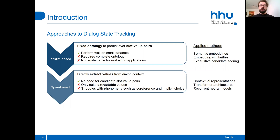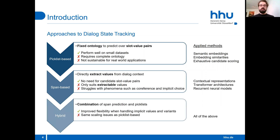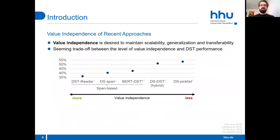The downside is that span-prediction only suits values that can be found in the input directly. These methods also struggle with natural language phenomena such as coreferences and implicit choice. Lastly, recent hybrid approaches improve the flexibility when handling variance in expressions, but they have the same scaling issues as picklist-based methods. Scalability and generalization is linked to an idea called value independence: it is desired that the dialogue state tracker's performance is independent from which values it knows from training or from picklists.